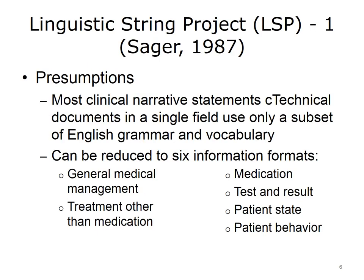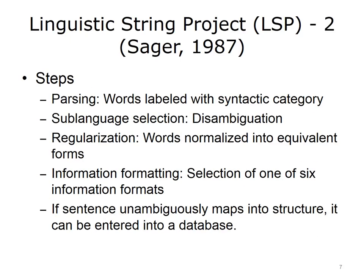The Linguistic String Project was one of the first large-scale attempts to do NLP over clinical text. The project was started by Sager and colleagues in the 1980s, based on work analyzing clinical documents. A key presumption was that technical documents in a single field, such as medicine, used only a subset of English grammar and vocabulary — a subgrammar. In analyzing large numbers of documents, it was believed that essentially all statements in clinical documents could be reduced to one of six information formats: general medical management, treatment other than medication, medication, test and result, patient state, and patient behavior. The system aimed to take clinical language and map it into the meaning encoded in these information formats.